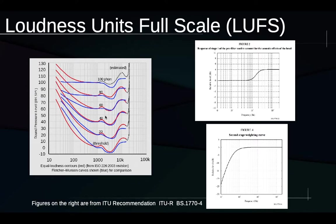What Loudness Units Full Scale does is take audio and put it through two filters in such a way as to very approximately reverse the effect of the equal loudness curves. What we get, in theory, is a new version of the signal that emphasizes the frequencies that required less energy to begin with — those more sensitive regions of hearing.